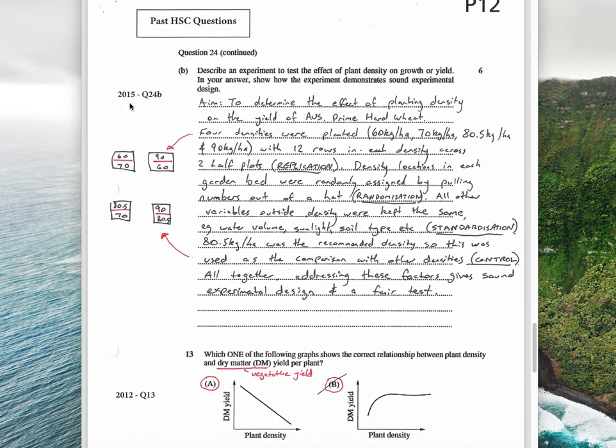Here's our diagram, and you can see there's a couple of questions. This first one from 2015 says: describe an experiment to test the effect of plant density on growth or yields. In your answer show how the experiment demonstrates sound experimental design. It's good to put an aim in here. As I said, determine the effect of plant density on the yield of Australian Prime Hard wheat. Four densities were planted: 60, 70, 80.5, and 90 kilos per hectare, with 12 rows in each density across two half plots.